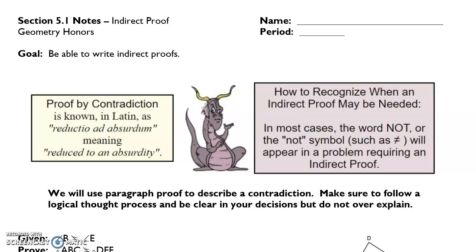Hello ladies and gentlemen, it's Mr. Szabo. Today we're going to be talking about indirect proof. This is section 5.1 in your textbooks. Indirect proof in Latin is known as reductio ad absurdum. That means reduced to an absurdity.